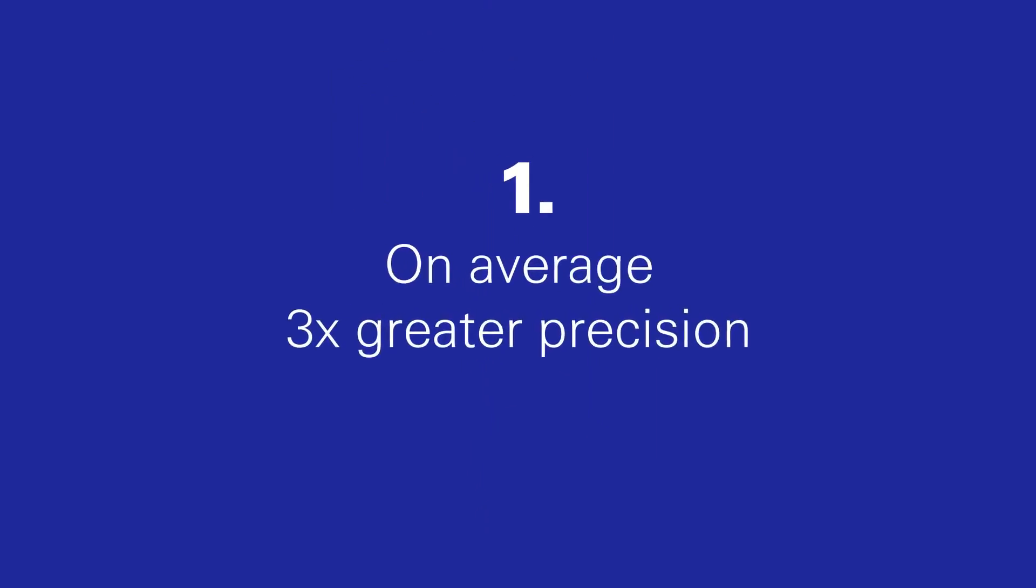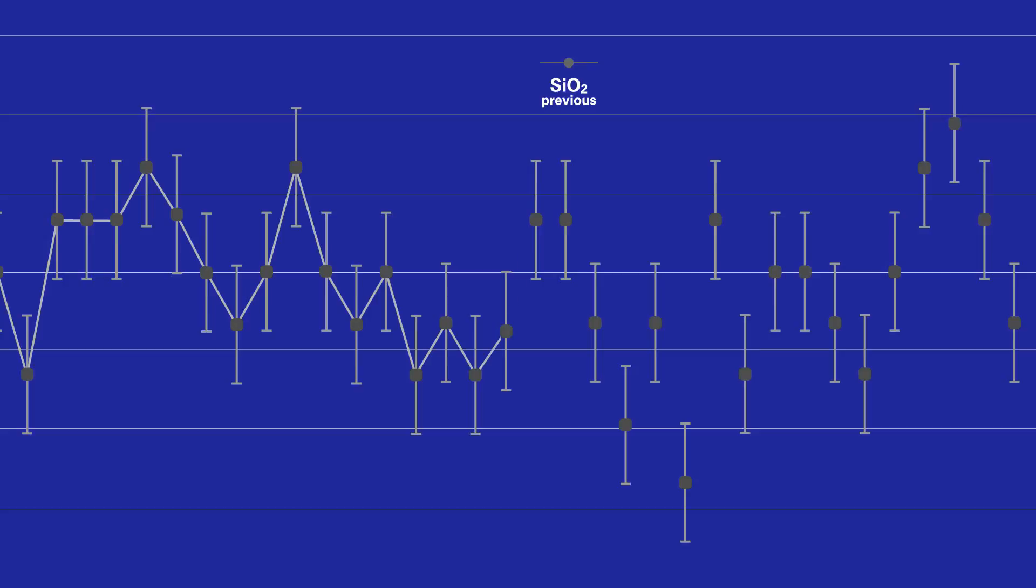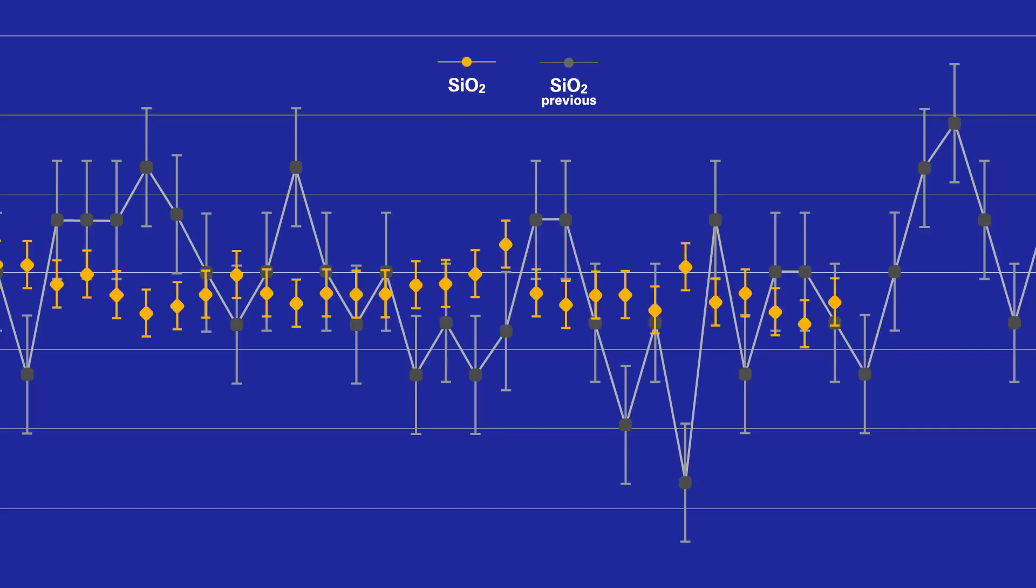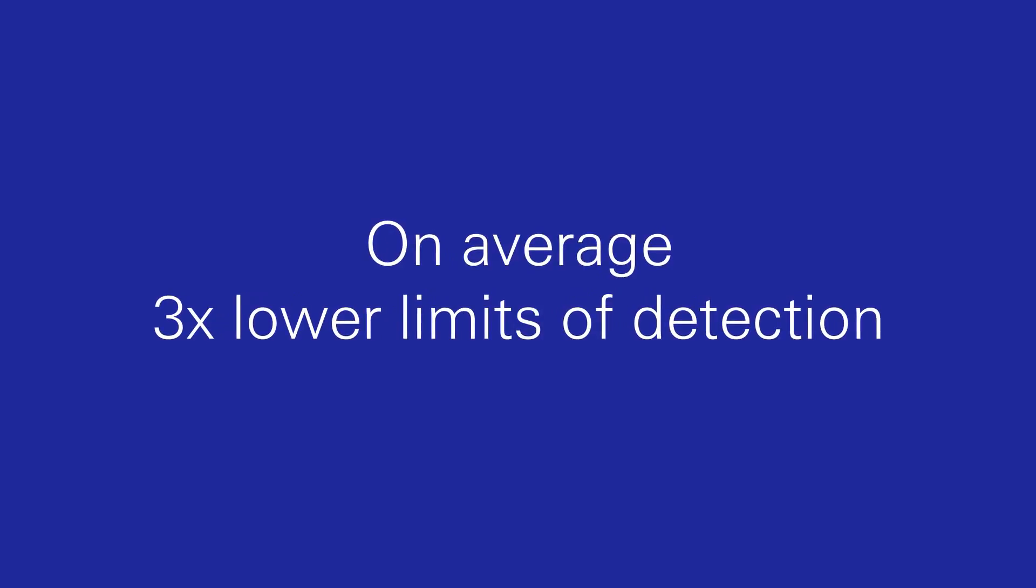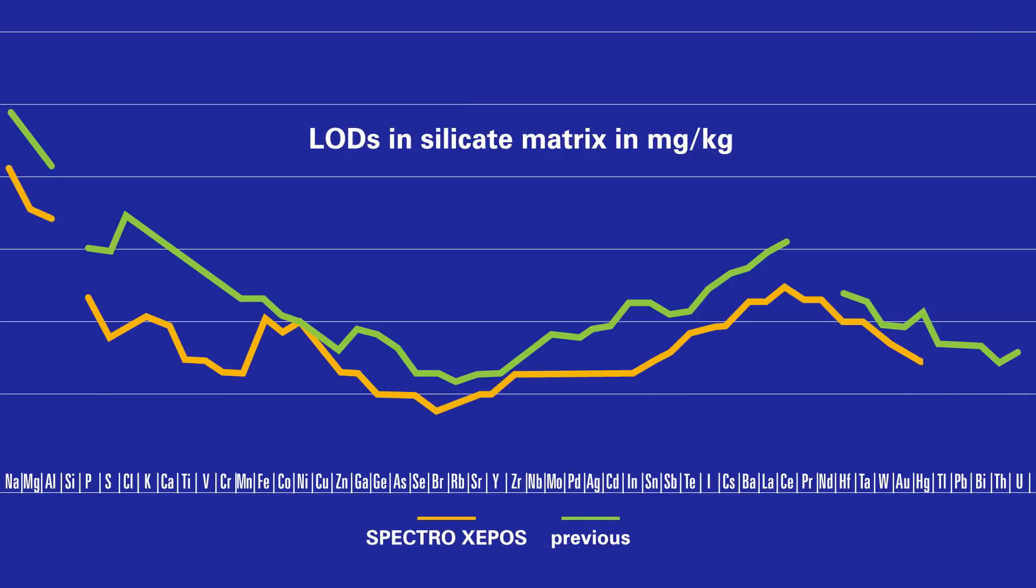First, you get analysis so precise, it's not just qualitative, it's quantitative. Because new designs deliver breakthrough levels of excitation, detection and calculation, your results show not just quality—what elements are present—but quantity, how much of each element is found. And you get those results even for unknown samples.